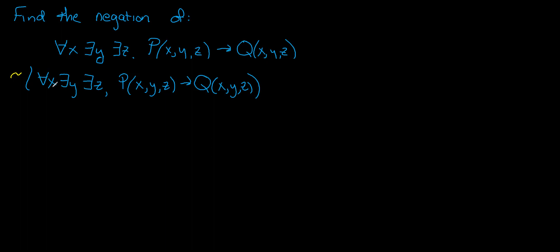So the first thing I'm going to work on here is I'm going to negate my universal quantifier. So the negation of for all would be there exists. So we've got there exists an x and then I need to negate the rest.